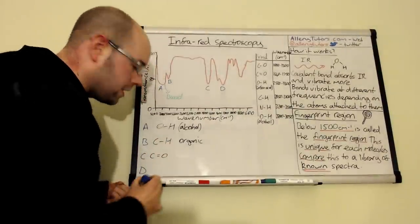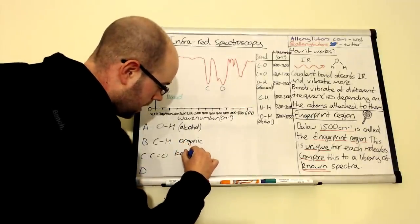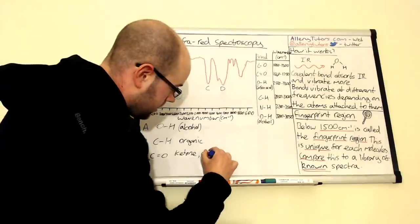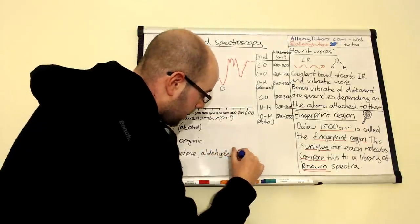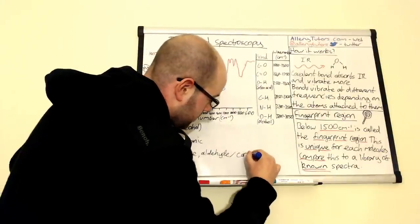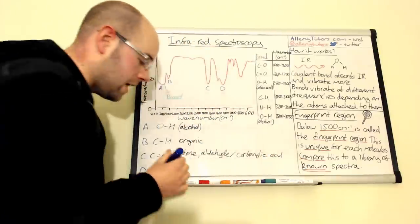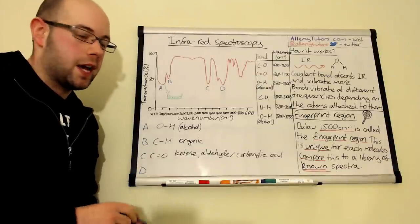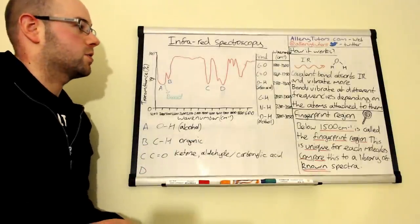Now this could mean a lot of things. This could mean we could have a ketone on our hands, we could have an aldehyde, we could have a carboxylic acid as well. So this could mean a lot of things. It doesn't really identify exactly what the molecule is but we know that this molecule has got to have a carbonyl group in there somewhere.